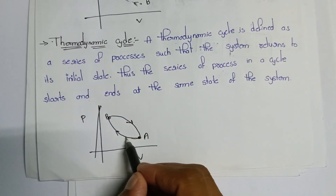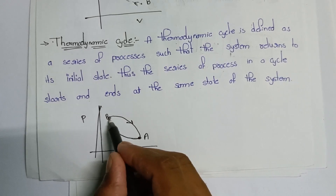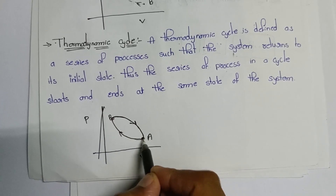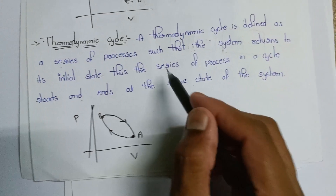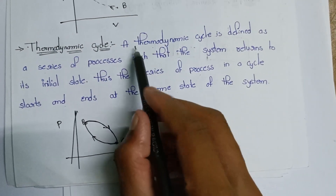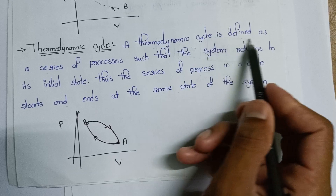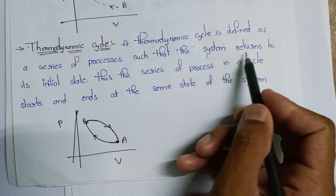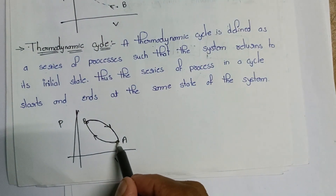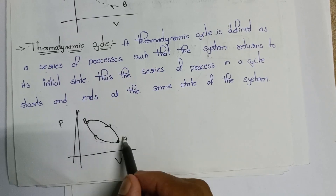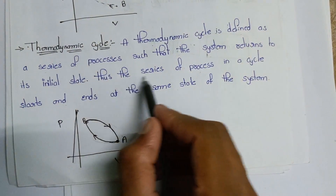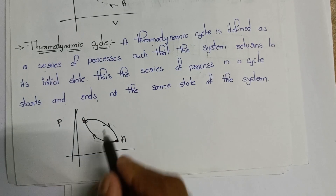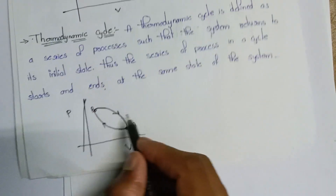The process should reach from path A to B, and the starting point is also the ending point. This is the thermodynamic cycle — defined as a series of processes in the system such that the system returns to its initial state. The series of processes in a cycle starts and ends at the same state of the system.